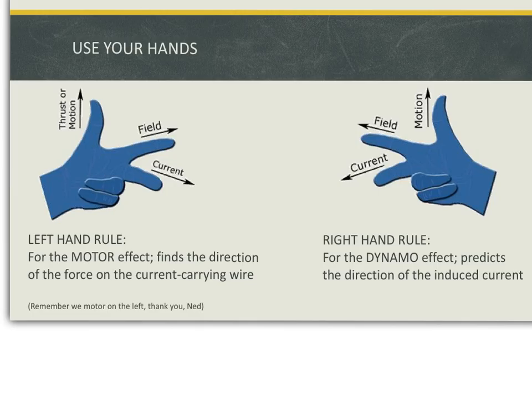When analyzing field questions, you can use your left or right hand depending on the type of question asked. If it's the motor effect, use your left hand. And while you're using your left hand, it finds the direction of the force in the current carrying wire. Or you can find the field, or motion, depending on what components you have. If you're looking for the dynamo effect, which predicts the direction of the induced current, use your right hand.